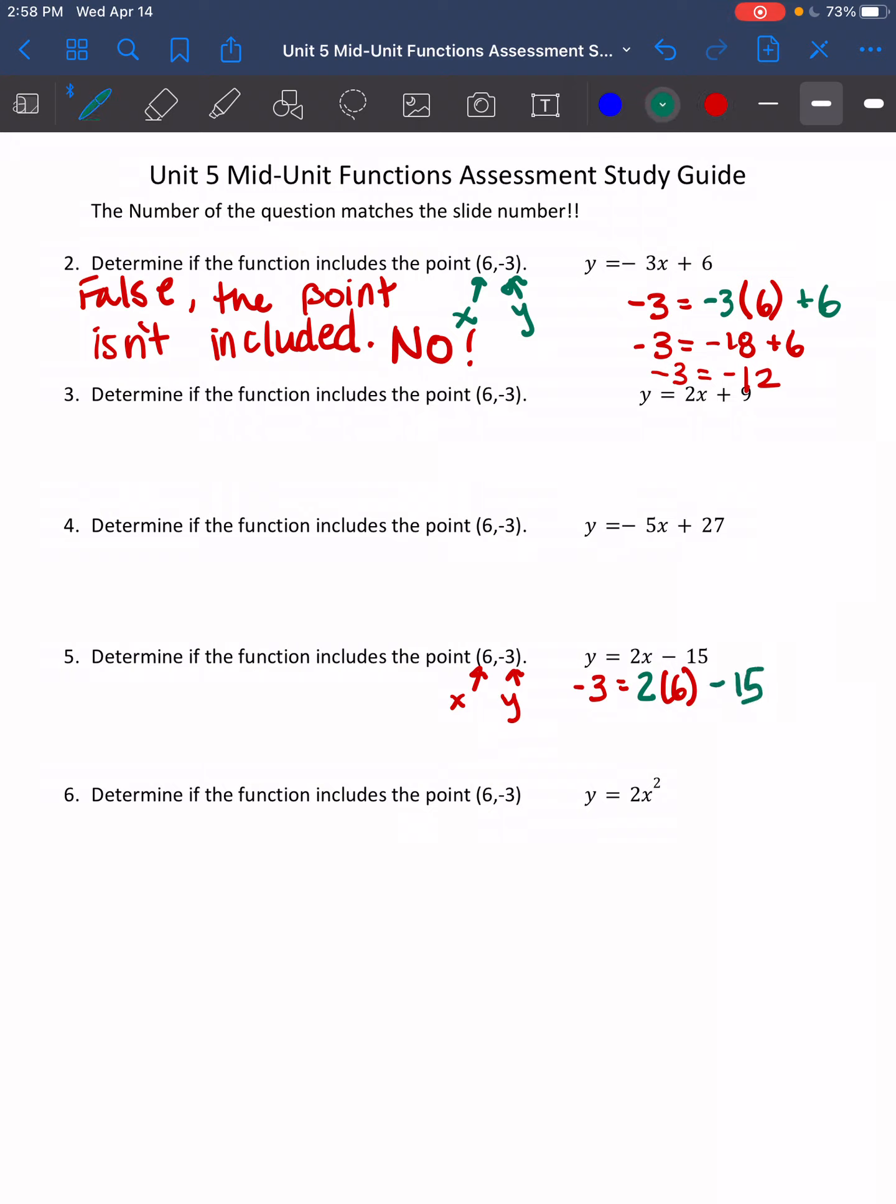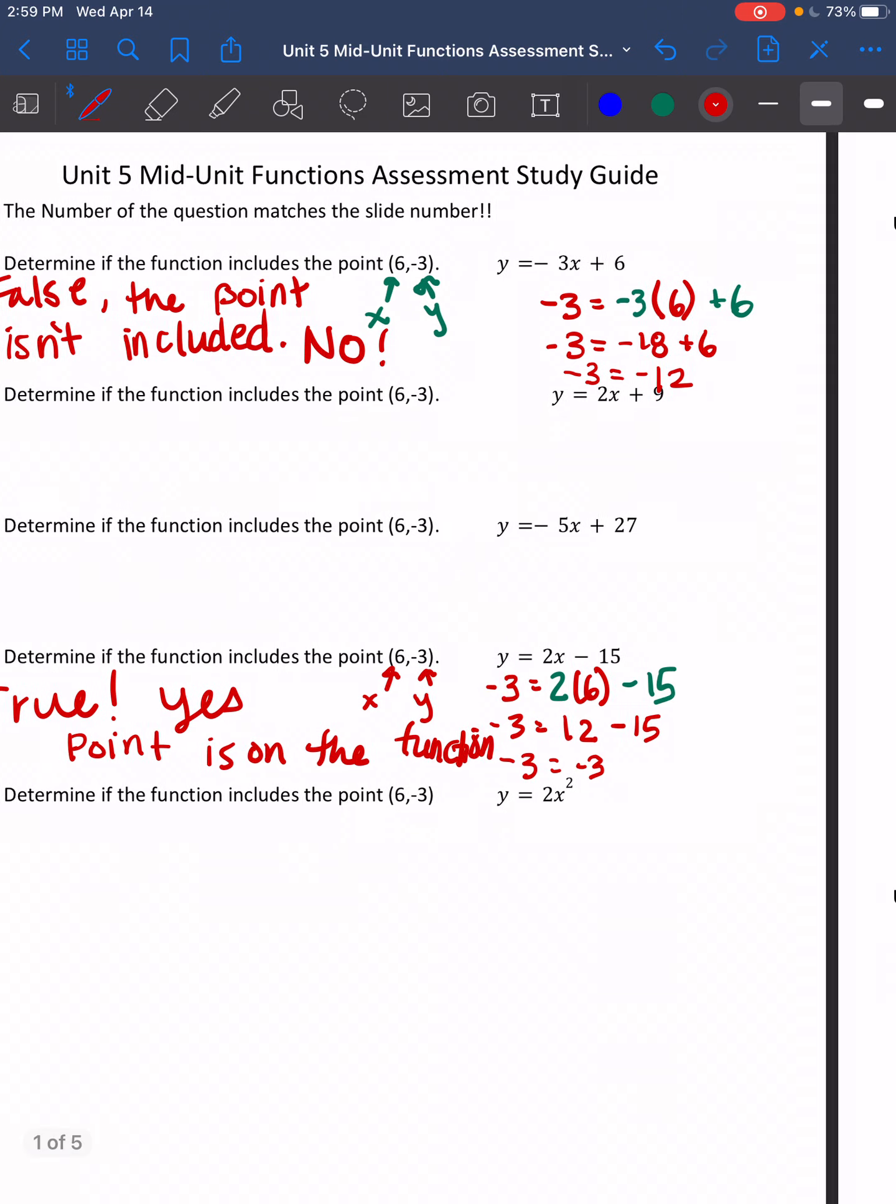So I'm going to say negative 3 equals 2 times 6 minus 15. I'm substituting in for the variables there. So negative 3 equals 2 times 6 is 12, 12 minus 15. Negative 3 equals 12 minus 15 gets me negative 3. So negative 3 equals negative 3. That's a true statement. So on the Desmos, you would write yes, or we know that the point's on the function.